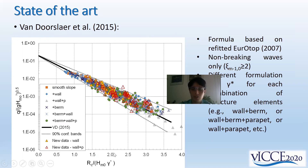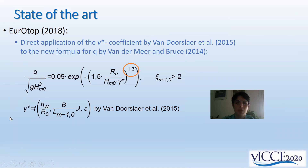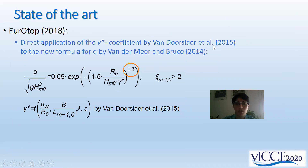In 2018, the EurOtop manual directly applied the coefficient gamma star by van der Sleer 2015, which was developed for EurOtop 2007, to the new formula adopted in the updated version of the model by van der Man and Bruce. Essentially, this formula differs in the 1.3 as the exponent of the exponential term.